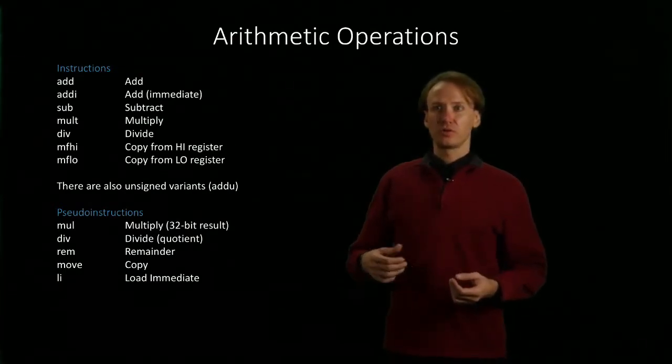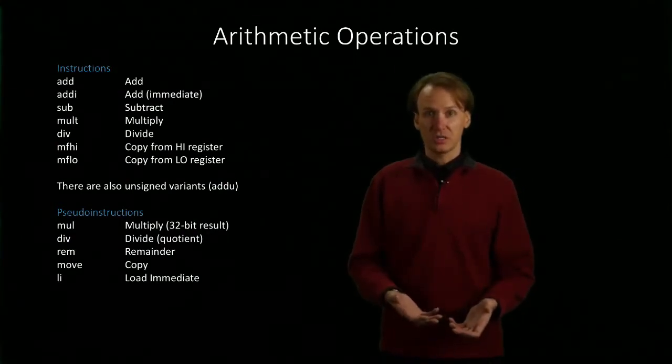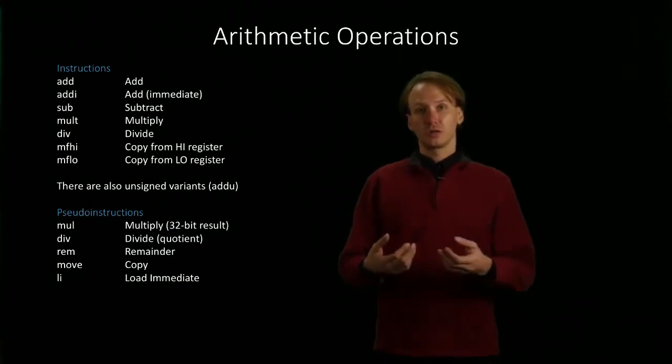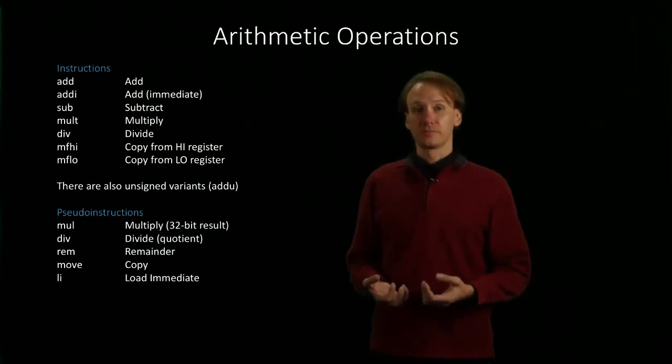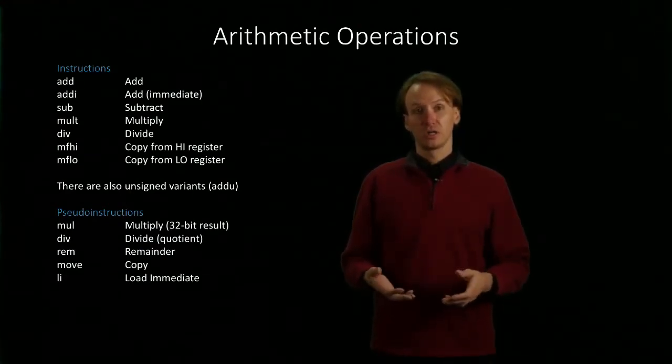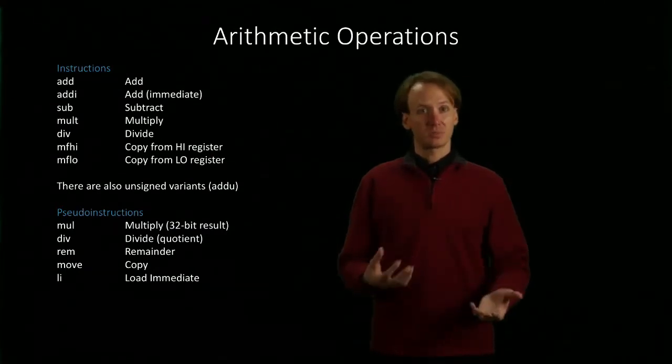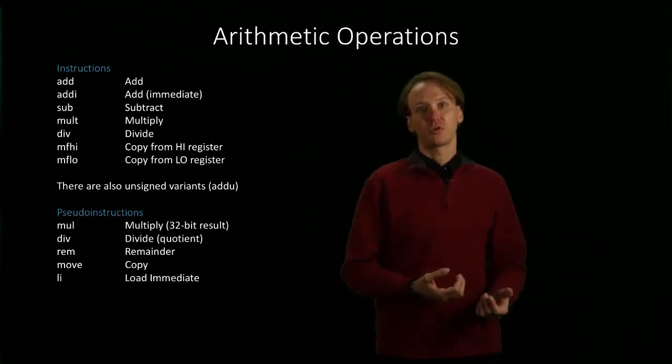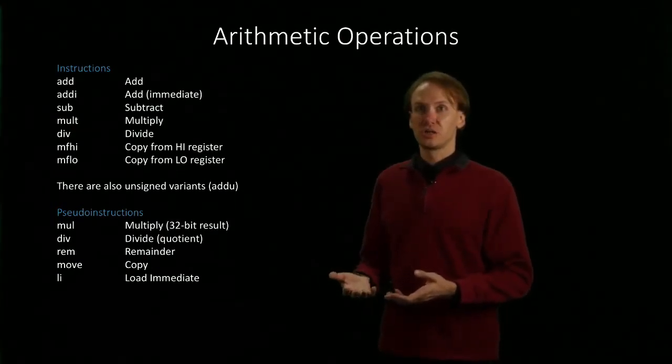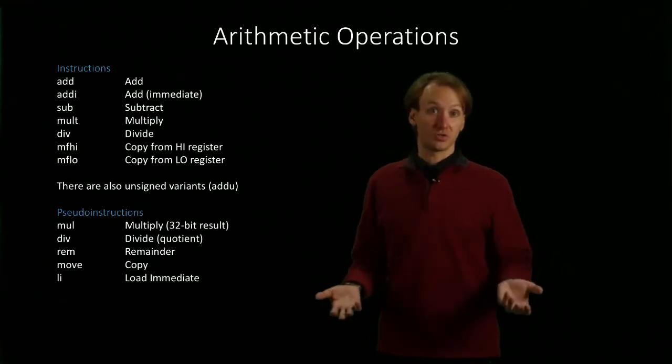For example, the mul pseudo instruction differs from the mult instruction in that it will copy the results from the low register into an output register. In this case, it will just discard the upper 32 bits of the result and only keep the lower 32 bits, but if you're just multiplying small numbers and expecting to get a small number out, that can save you some time. Then you only have to write the mul pseudo instruction. You don't have to write the mult instruction followed by a move from low instruction.